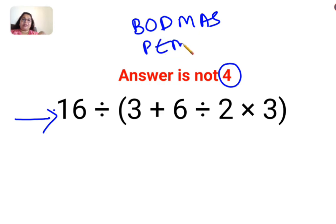Whatever works for you, you can follow. The first thing you do is you have to give highest importance to brackets or parentheses. So we'll keep 16 as it is, divided by as it is. First we'll solve this bracket.